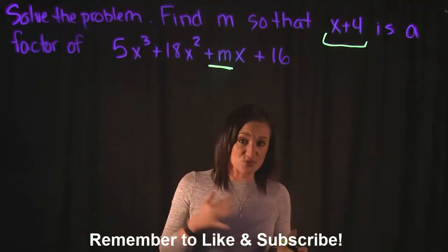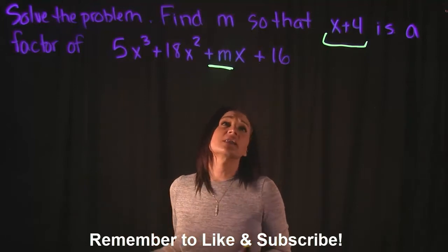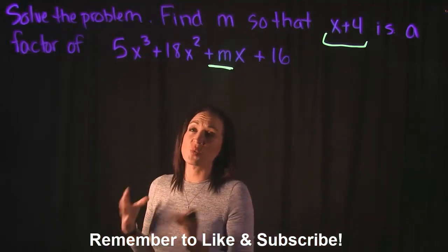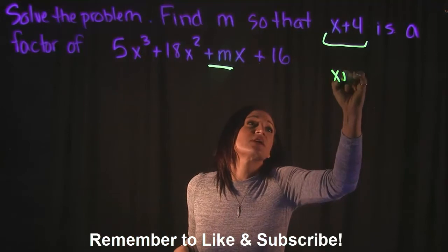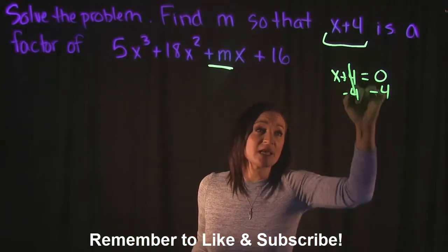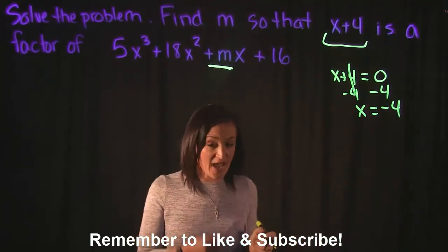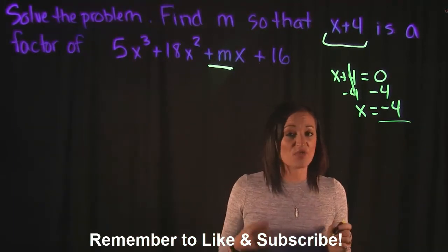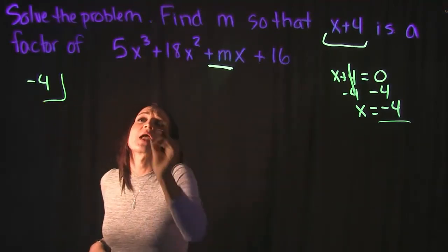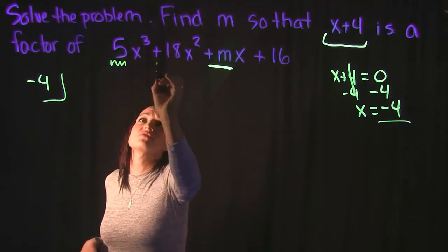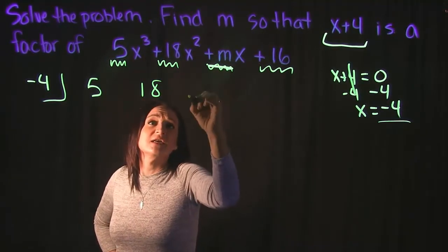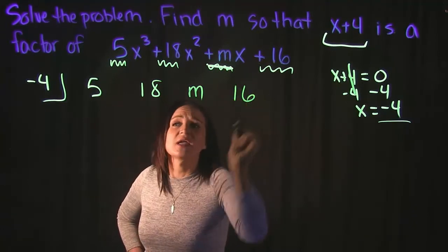So what we're going to do is use synthetic division to help us figure this out. They said that x plus 4 is a factor, so in order to know what zero we're going to test, we need to remember that if x plus 4 is a factor, then x is equal to negative 4. So it's negative 4 that we're going to test. We use the coefficients of all our terms: 5, 18, m — which we're trying to figure out — and 16.